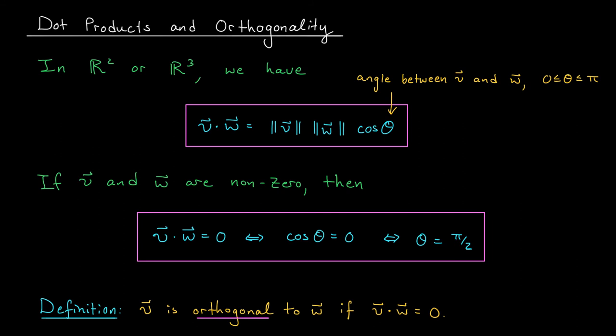What we've just argued is that if you have two non-zero vectors, then their dot product is 0 if and only if the vectors are perpendicular. Now, of course, all of this is taking place in R2 or R3, because these are the settings that we can visualize. But still, we can use this connection to make a definition of perpendicular for vectors in Rn.